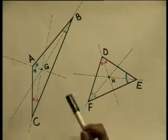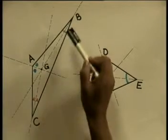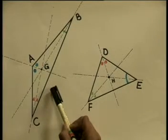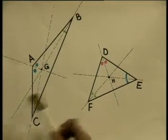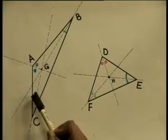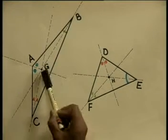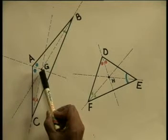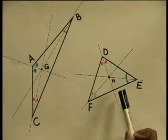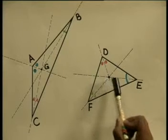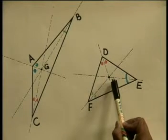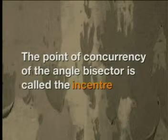Next, we will investigate the angle bisectors. Remember, in lesson two, we constructed the angle bisectors in the obtuse angle triangle as well as the acute angle triangle. Angle bisectors divide angles into two equal parts. The angle bisectors intersect at point G in the obtuse triangle. If we look at the acute angle triangle DEF, we see that the angle bisectors also intersect at one point, which is H. The point of concurrency of the angle bisectors is called the incenter.